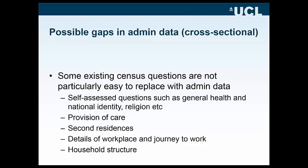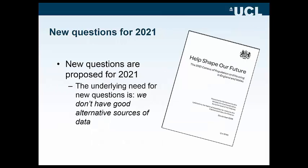What happens with longitudinal data? The LS structure in England and Wales and Scotland assumes a census will occur. If we don't have a census, that structure can't continue as it is. However, all is not necessarily lost. Given the multiple administrative sources we now know how to link to individuals, we can think about how we might take those LS sample members, identify them by date of birth and link them by name in a secure setting, and link administrative data to the LS. We'd be able to observe many census-type characteristics, albeit not all of them.